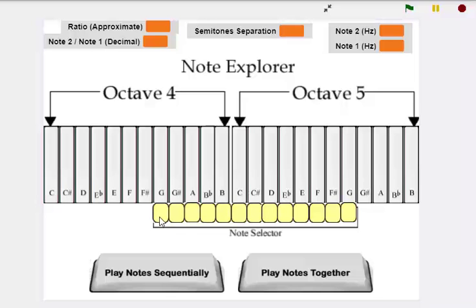Each of these notes has a frequency associated with it. So if I select G in the fourth octave, I find that it has a frequency of 392 Hertz. That means that when this note plays it will cause the speaker of the computer to vibrate at a rate of 392 times per second.